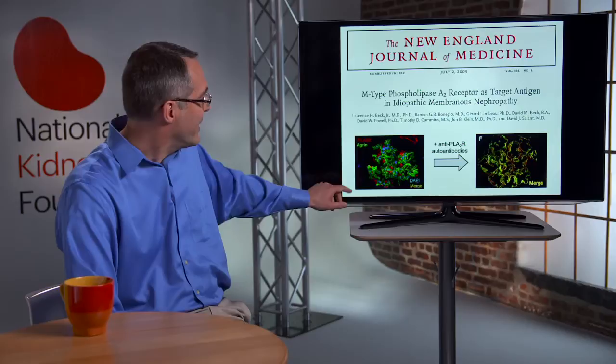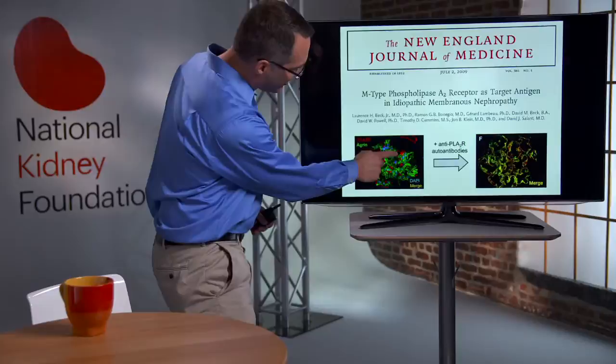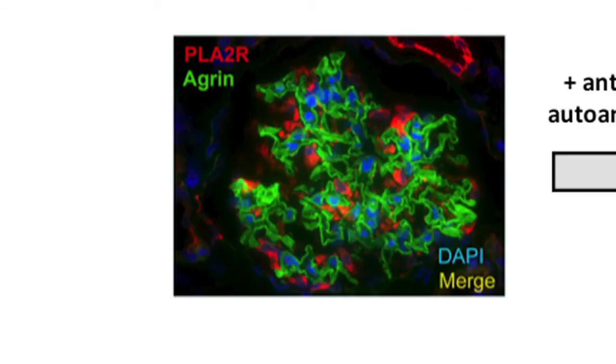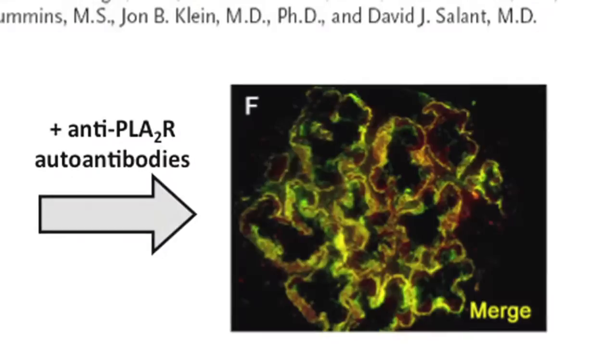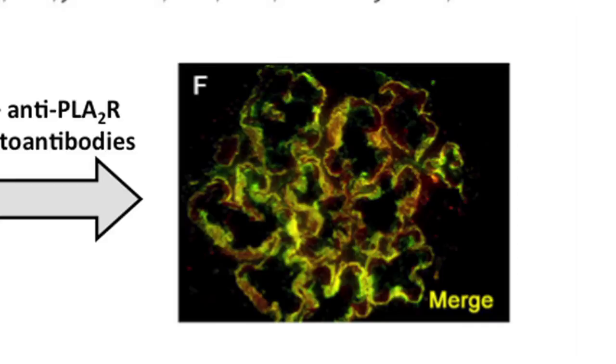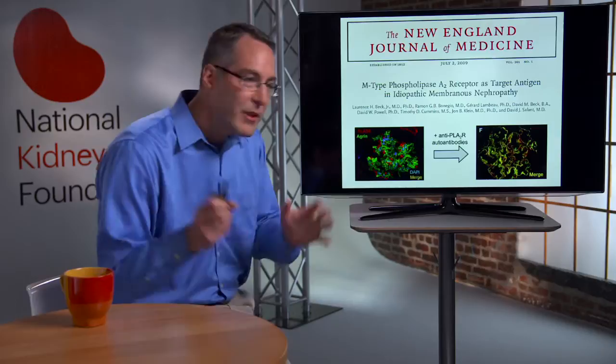PLA2R — and I'll refer to it as that for the rest of the talk — is a transmembrane glycoprotein on the podocyte cell membrane. We don't really know what it does in the podocyte, but in the presence of antibodies to PLA2R, we go from a normal state — with PLA2R shown in red — and if we introduce anti-PLA2R antibodies, we get aggregation of antigen and antibody. The yellow in this slide represents the merge of the antigen in red, PLA2R, which co-localizes with green, which is the antibody.